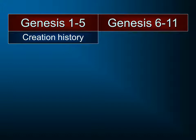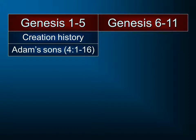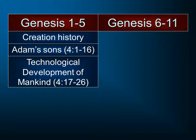In chapters 1 through 5, we had creation history with God creating the heavens and the earth. Then we saw the fall followed by the sons of Adam, specifically Cain and Abel, and we saw how Cain killed Abel. We might have noticed that there was a certain technological development of mankind, as the sons of Lamech are said to have been the father of those who dwell in tents, who use musical instruments, and who give rise to iron and metalworking. So that technological development is described in brief in those verses.